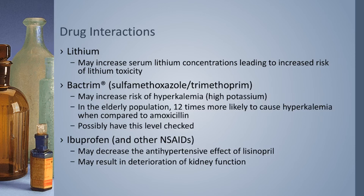The next one is the antibiotic Bactrim — the generic name is beside it there. So like we talked about before, lisinopril can cause an increase in potassium, and so can Bactrim. So if you take these two drugs together, you can increase your chances of getting hyperkalemia, or too high of potassium, which can cause some serious problems. I would recommend getting your potassium level checked if you start taking Bactrim, but again, that's really up to your doctor.